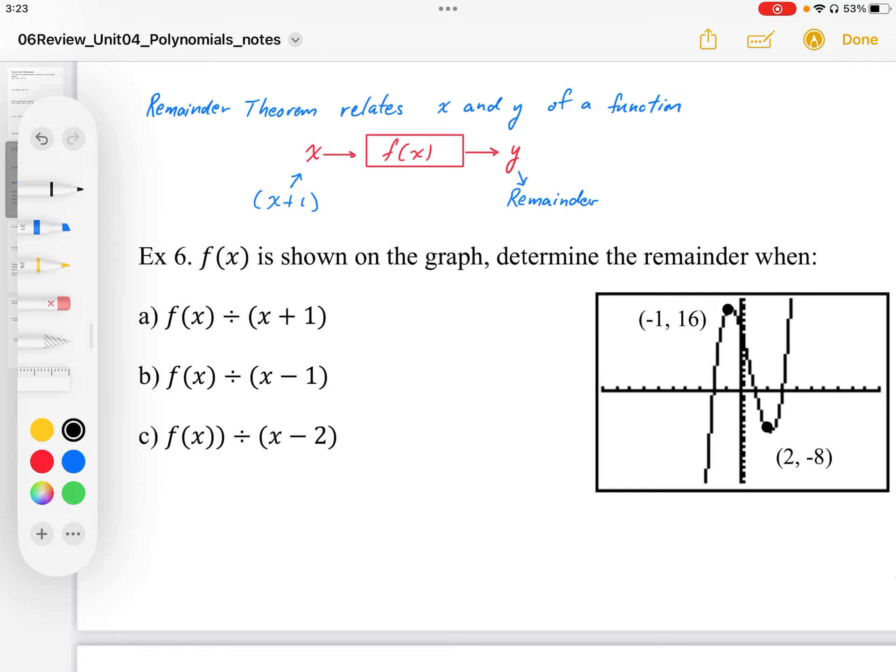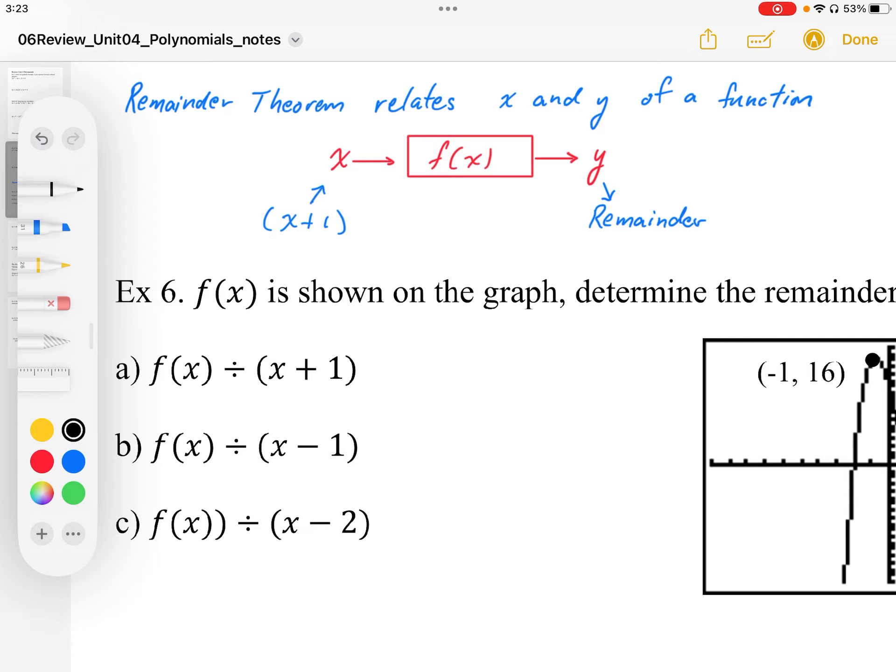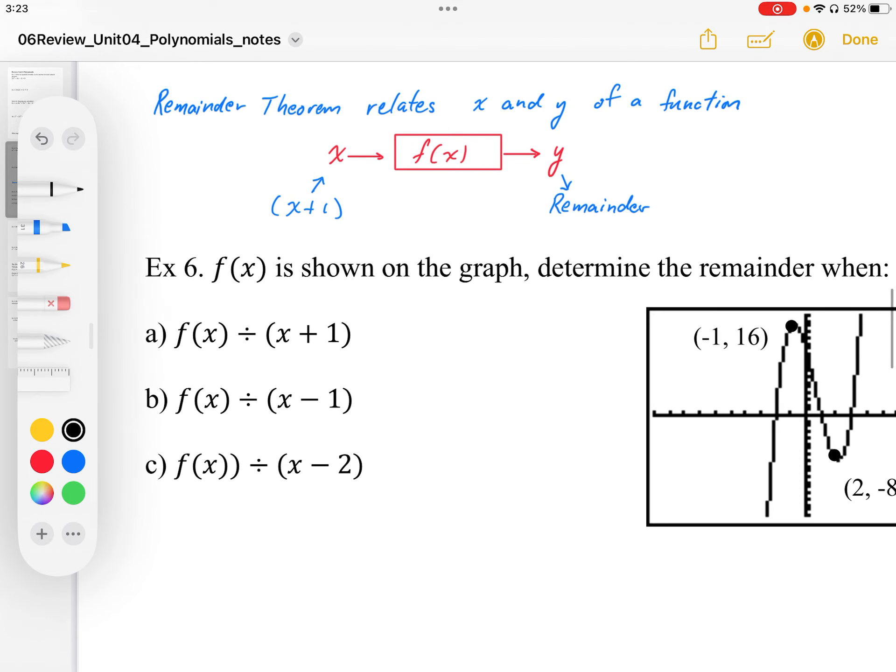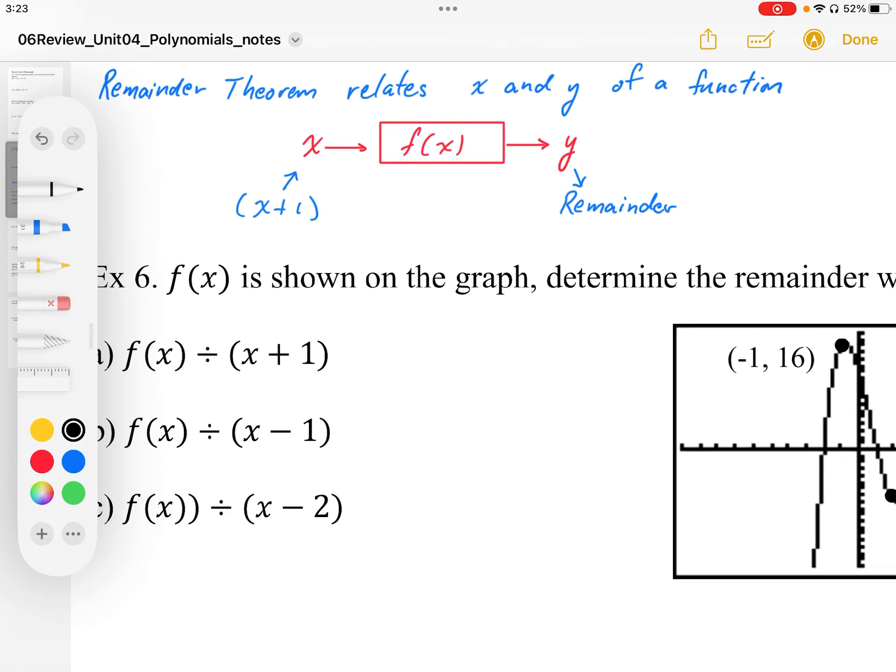So if we have our function in red here, we have our input x, our output is y, those are x and y coordinates, and the remainder theorem is when we have a factor, for example x plus 1, we input the root, which is negative 1, and the y value then represents the remainder.